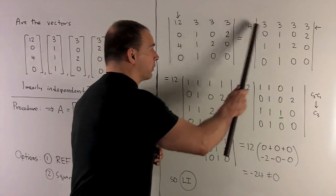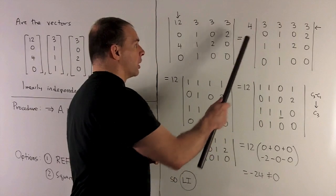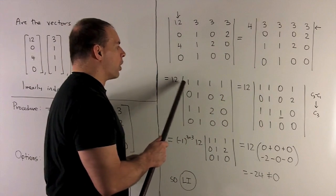Next operation, we're going to factor a three out of row one. So that'll put a three out in front to give us a 12, and then I get a row of ones.